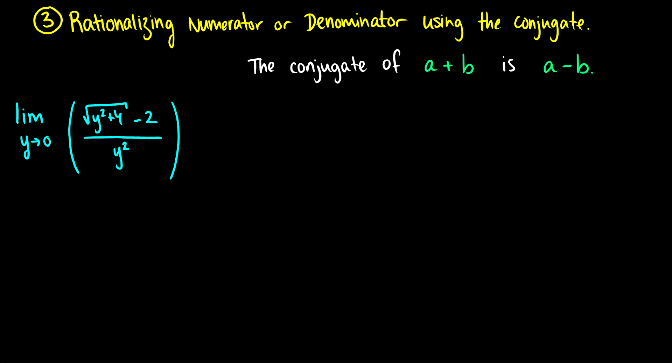The most complicated trick — or rather method — that everyone is confused by in their introductory calculus course, because they never really practiced this in high school, is rationalizing numerators or denominators using the conjugate. Here we have y goes to 0; there's nothing to expand, there's nothing to factor, but I have to get rid of this y squared on the bottom. Essentially, I want to multiply the whole thing by 1. If we multiply by 1 using the conjugate of a term we already have, then maybe things will look nicer. So what is a conjugate? If we have some a plus b, then the conjugate is just a minus b.